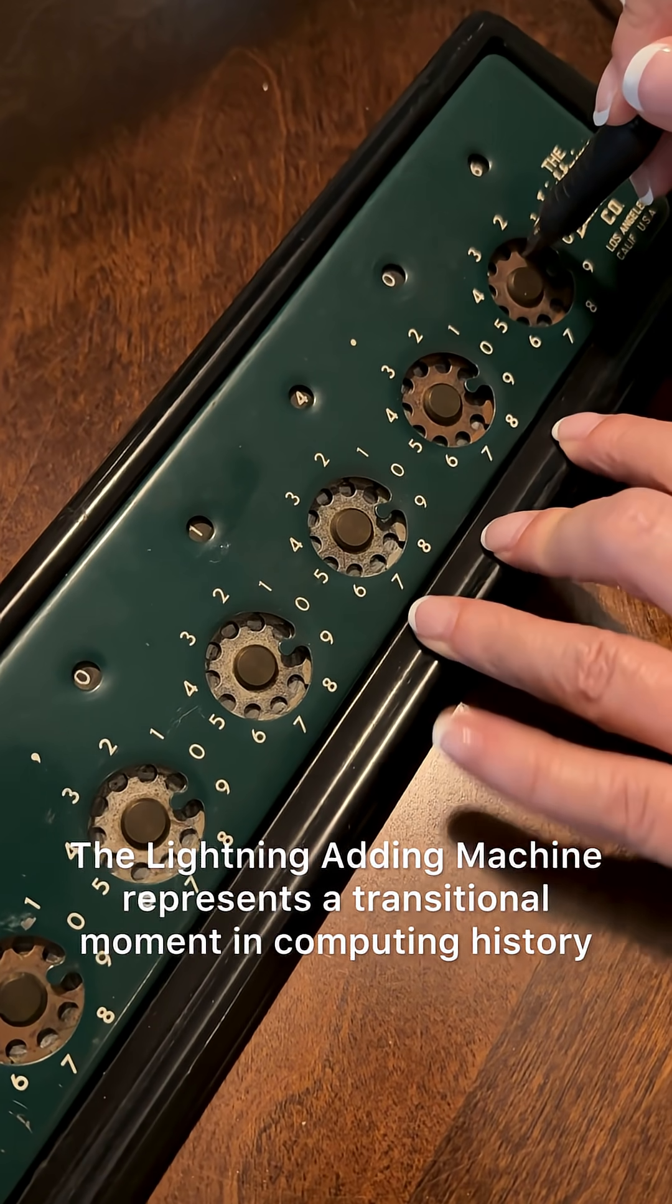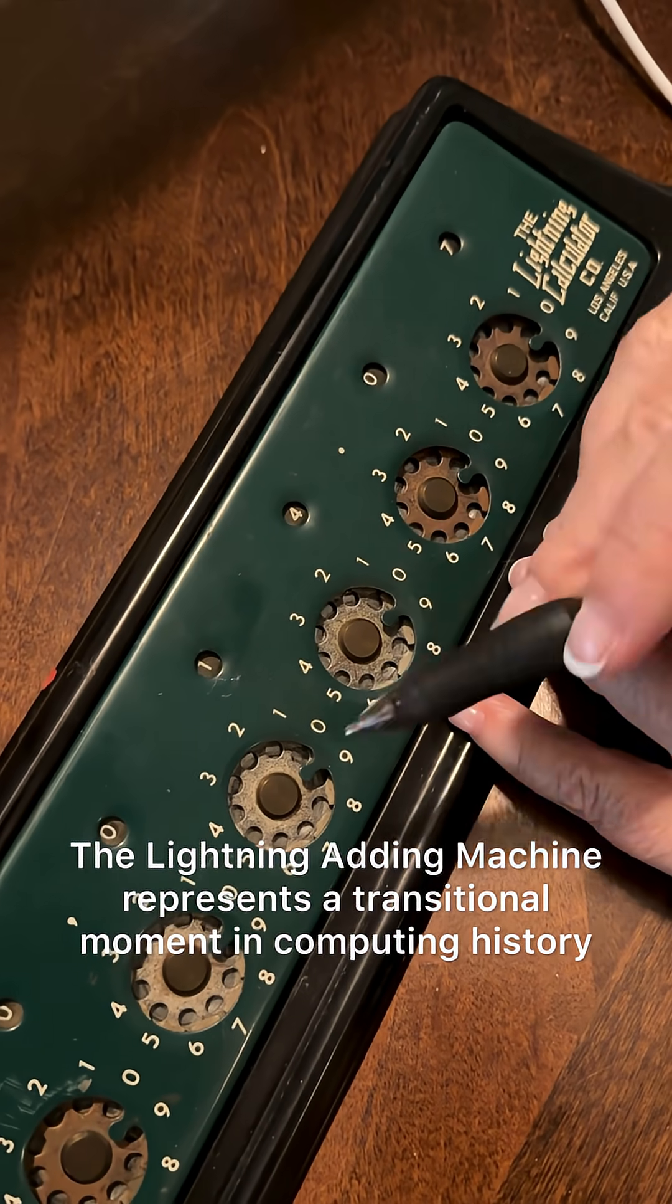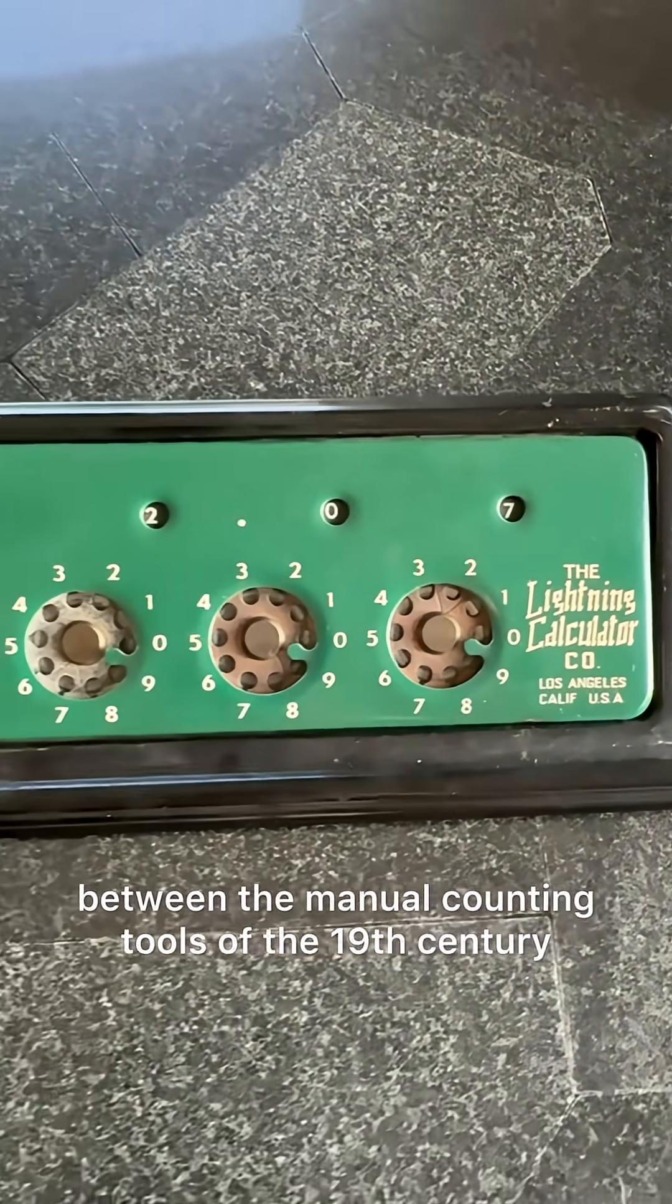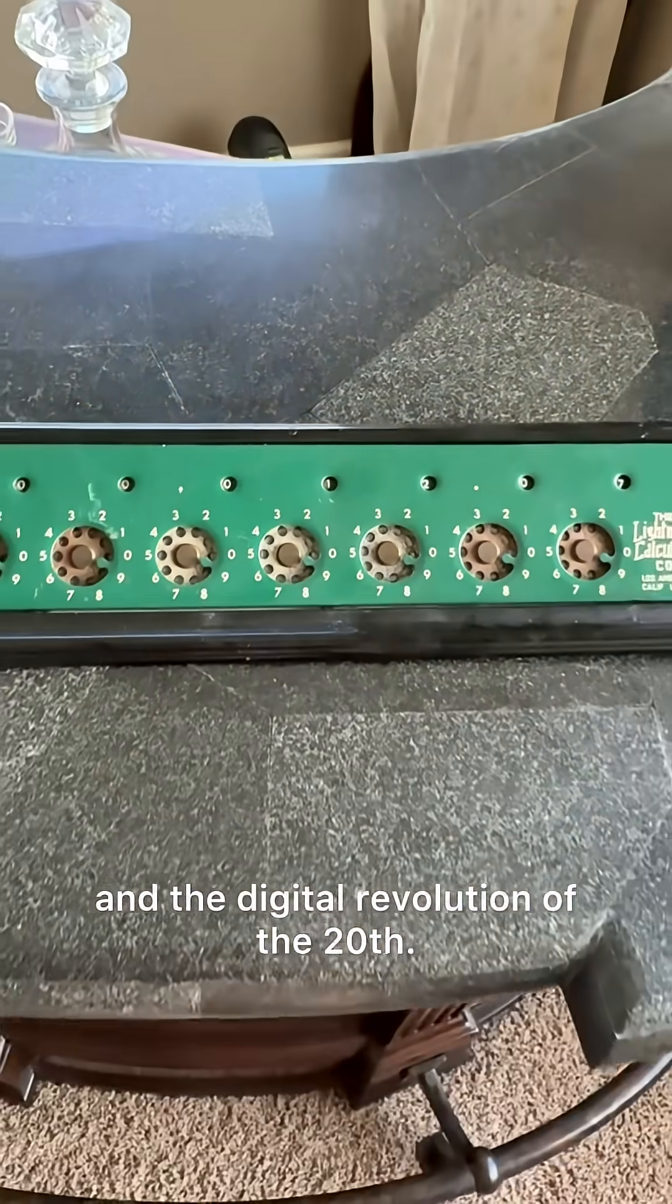The Lightning Adding Machine represents a transitional moment in computing history, between the manual counting tools of the 19th century and the digital revolution.